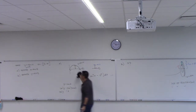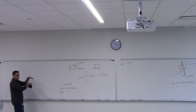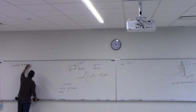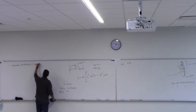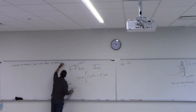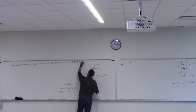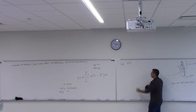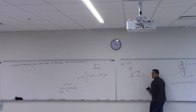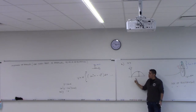Now the second method: method of shells. We're going to leave that open question and come back to it. I just wanted to show you that there are problems where it's not easy to just flip it and make your rectangle go horizontal. So let's see if there's another way. You use this method when the rectangle is parallel to the axis of rotation.